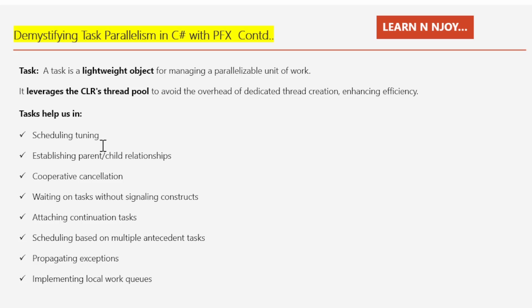When we say scheduling tuning, task allows for fine-tuning of scheduling, optimizing the order and allocation of work units. Establishing parent-child relationships means tasks can be organized hierarchically, with parent tasks managing child tasks, facilitating structured parallelism. Cooperative cancellation means tasks support cancellation mechanisms allowing for graceful termination of work units based on cooperative behavior. Waiting on tasks without signaling constructs means tasks enable waiting for completion without the need for explicit signaling mechanisms, simplifying synchronization.